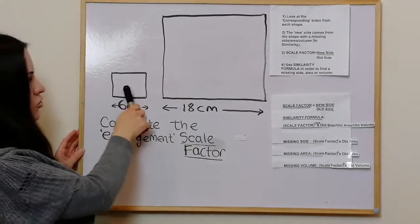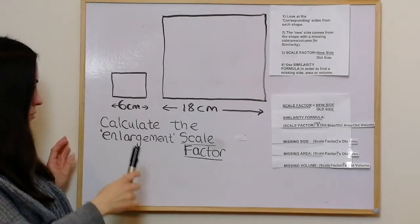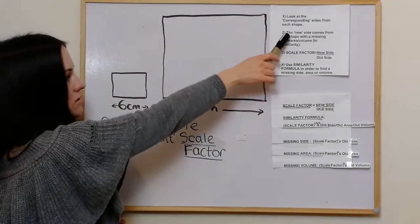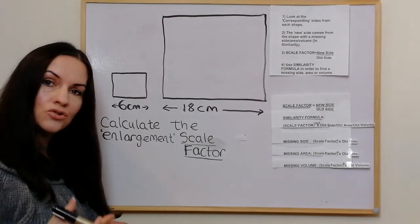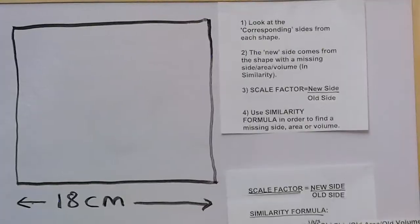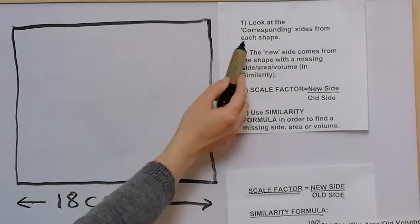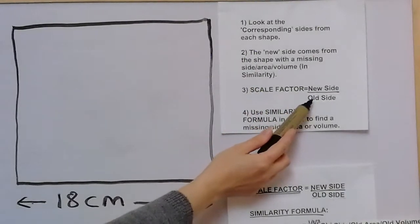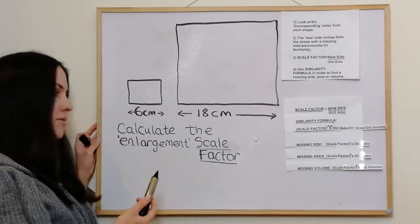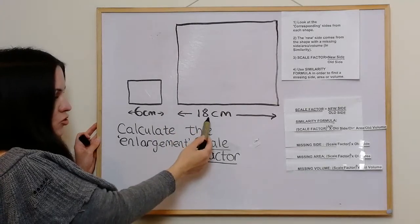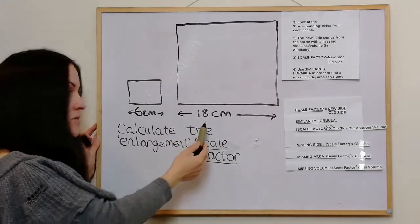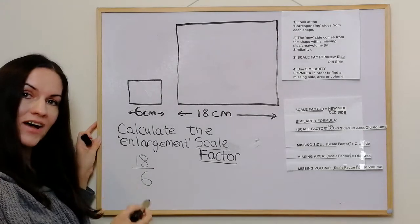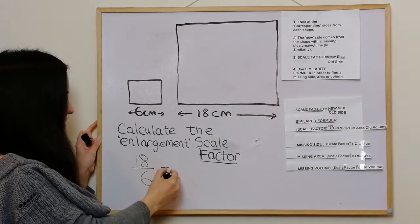So our first example here we've got two rectangles and what we're asked to do is calculate the enlargement scale factor. I'm going to look at the four step guide. In step one we have to look at the corresponding sides from each shape, and then to get the scale factor we just do the new side over the old side. So in this example these are the two corresponding sides, and this would be the new one because we're enlarging it. So it's new over old — 18 over 6. We should always simplify if we can, so 18 over 6 simplifies to 3.